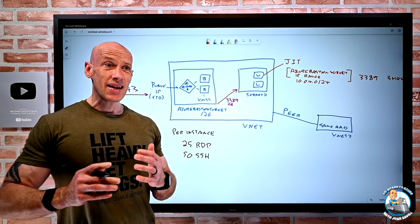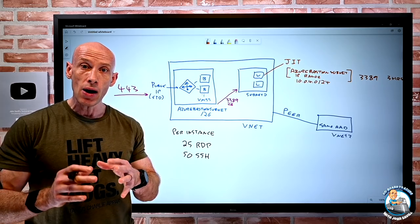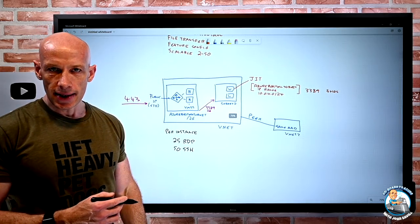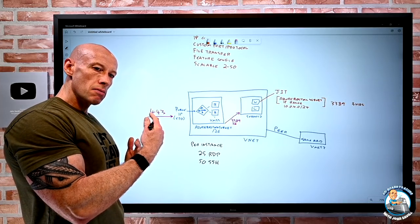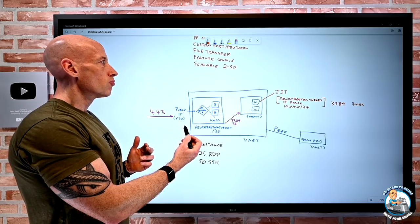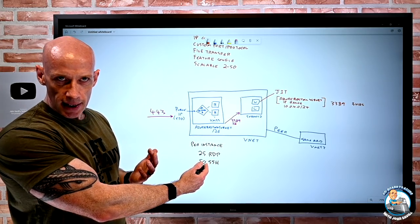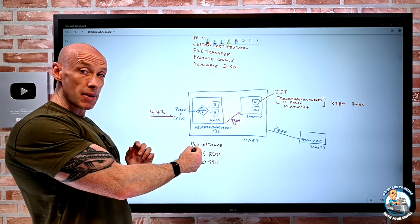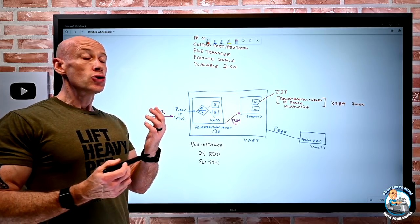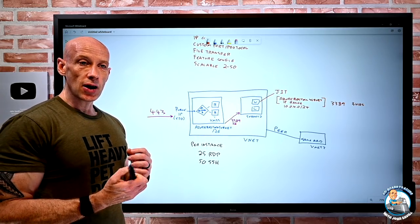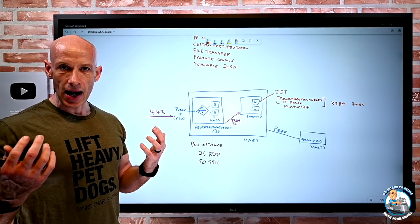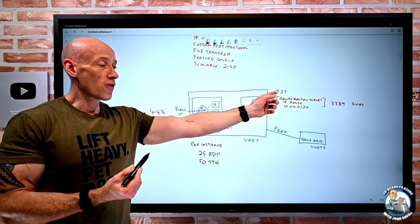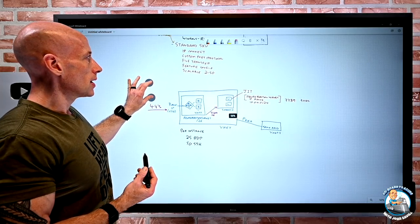Azure Bastion is very simple but super powerful for that managed jump box experience. Key reminders: use a /26 subnet minimum, understand your workload for sizing, use Standard SKU if you need more than 50 concurrent RDP or 100 SSH sessions, use the metrics to gauge real busyness. Consider the networking rules required — if you don't have the default VNet-allowed rules and have restrictions, you need to allow access from the Azure Bastion subnet, either through regular NSGs or via JIT with the Bastion subnet range as the exception.